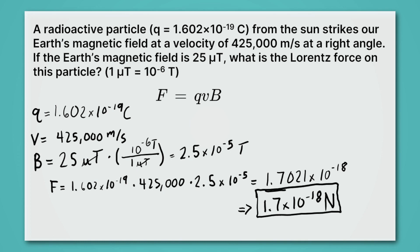So that's the force on this radioactive particle. Now, that's a pretty small number because it's 10 to the minus 18. But remember, a radioactive particle is also going to be quite small. So given the size of the particle, it's actually a very strong force, and it will accelerate it quite quickly so that it doesn't move towards Earth. Thanks, magnetic field.